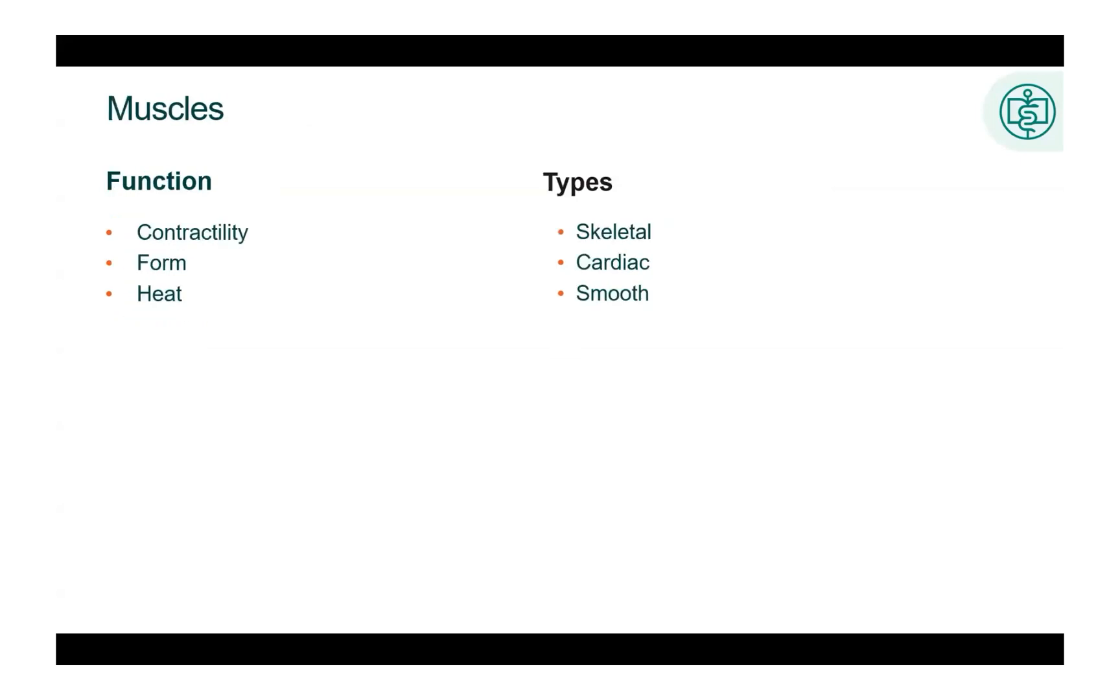Muscles have the property of contractility. They also provide form and produce heat for the body. There are three types of muscles. Skeletal, also called striated, muscles move the skeleton. They are attached to the skeleton by tendons. Cardiac muscle is the heart muscle. It is an involuntary muscle that pumps blood throughout the body. Smooth muscle is found in the walls of hollow organs of the body, like the esophagus to move food through, bladder to control urine, and even in your eyes.